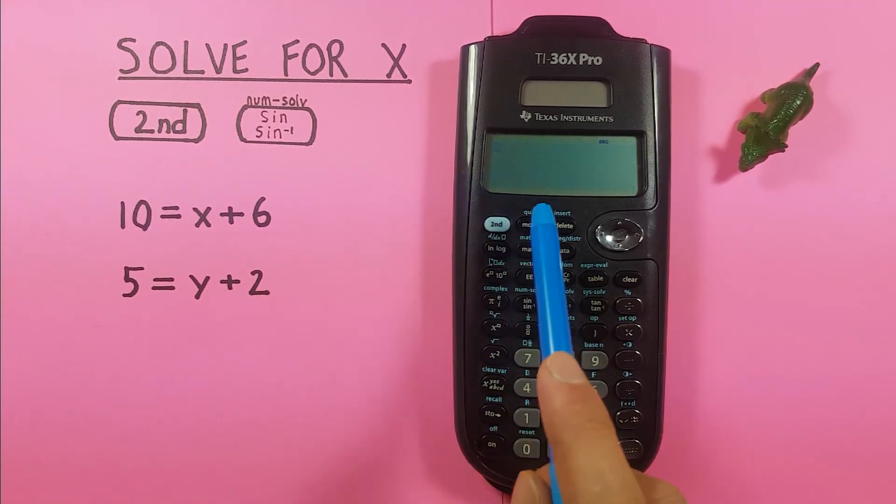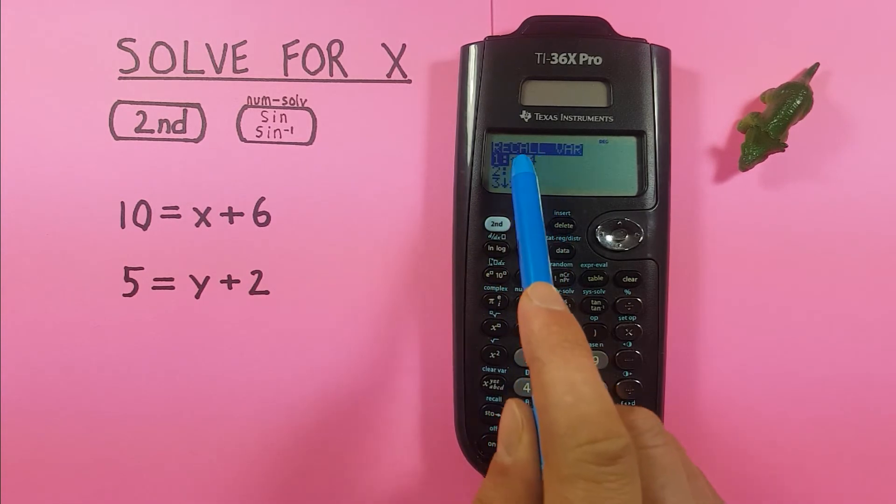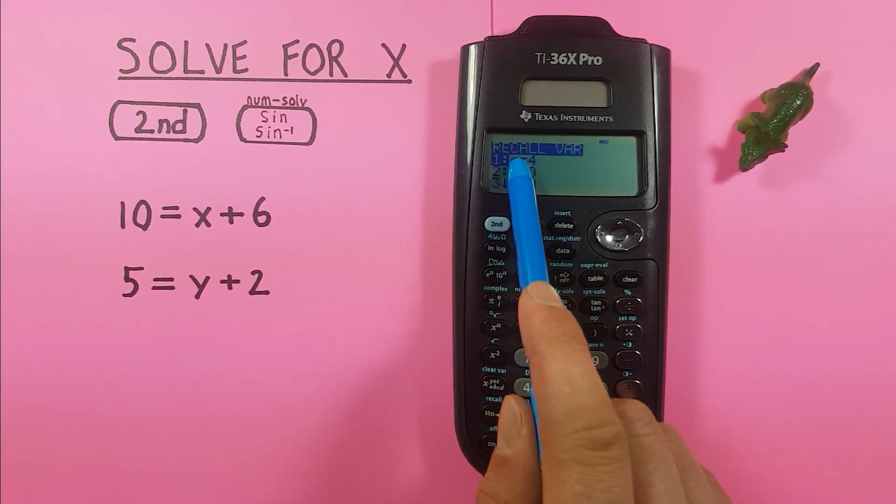Now that x has been saved as a variable into this calculator, we can view this if we go second, recall. We can now see that x equals 4 here. So we can bring that back if we need to.